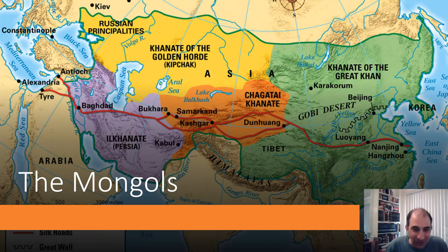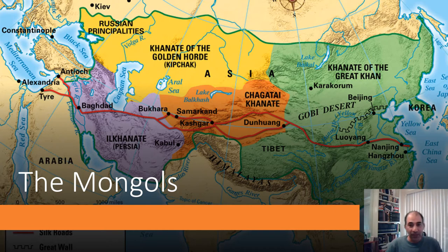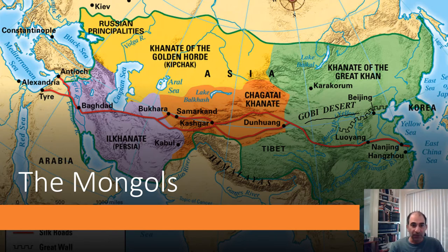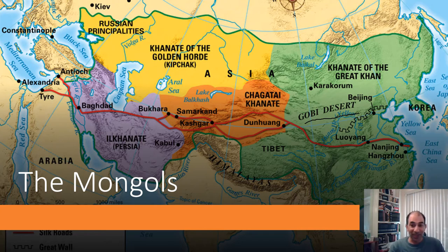I don't expect this to be a long lecture, but lecturing on the Mongols is always interesting because of what they accomplish. Everything you see colored on this map indicates land of the Mongol Empire. They're going to start up here from the Gobi Desert and spread very quickly throughout the region and into the Middle East. They actually go a little further than even what you see on this map — to give you perspective, this is about four times the size of the Roman Empire.